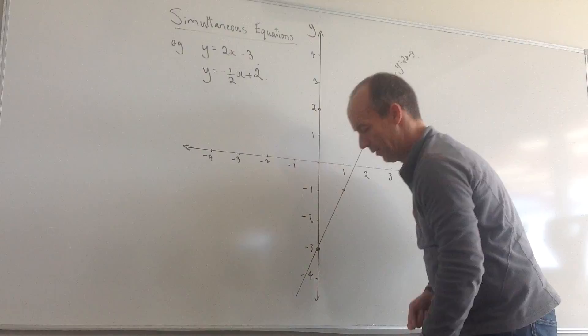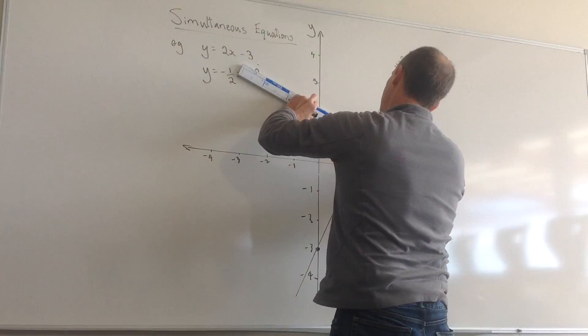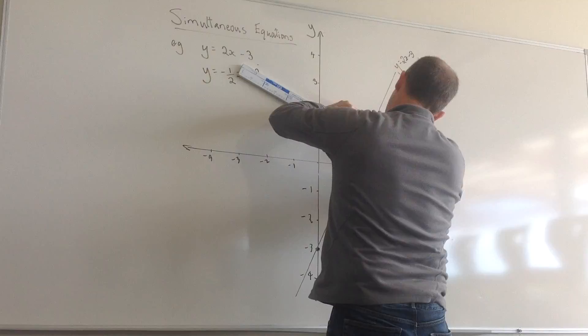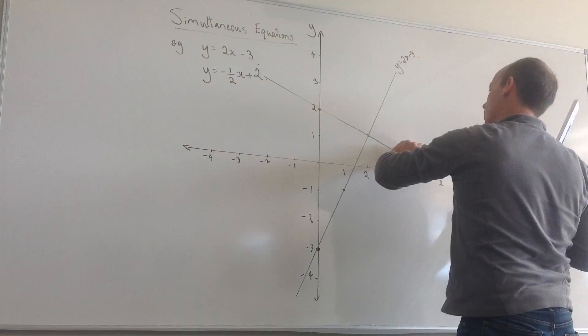Once I've got two points, I can join them up. This is my equation for y equals negative one-half x plus 2.